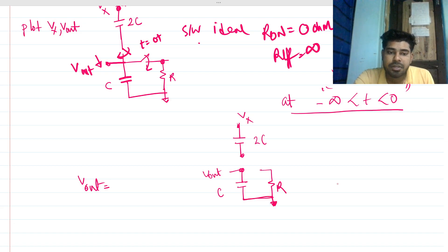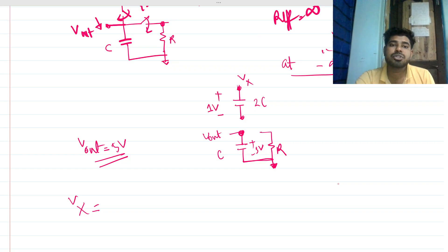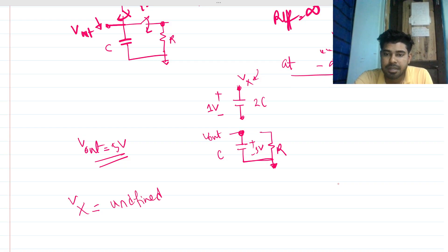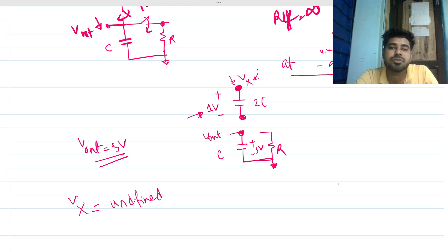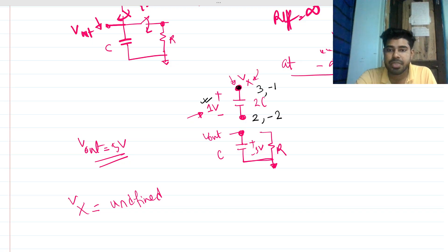Since this is ground, V_out was initially 5 volts, so it holds 5 volts. Now, V_x is the tricky part. The voltage across the two capacitors was 1 volt initially. However, we cannot exactly say what V_x is with respect to ground — it is undefined. The difference voltage is defined as 1 volt, but the absolute node voltage at V_x could be 2V, 3V, minus 2V, or anything — we simply don't know.